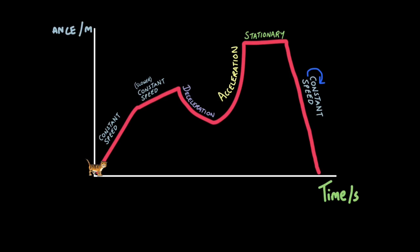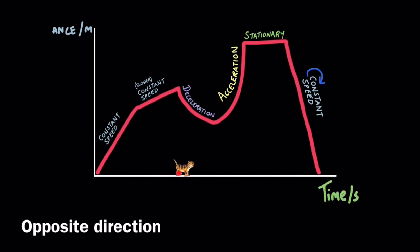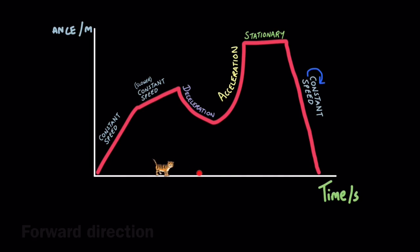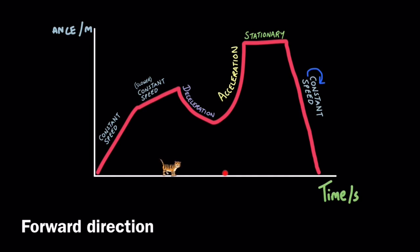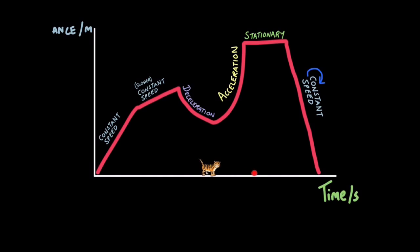Let's put this into action. Let's say this red dot represents time — 10 seconds of time. We'll see: constant speed, then a slower constant speed, then slowing down, then speeding up, then stopping, and now travelling back to the start.